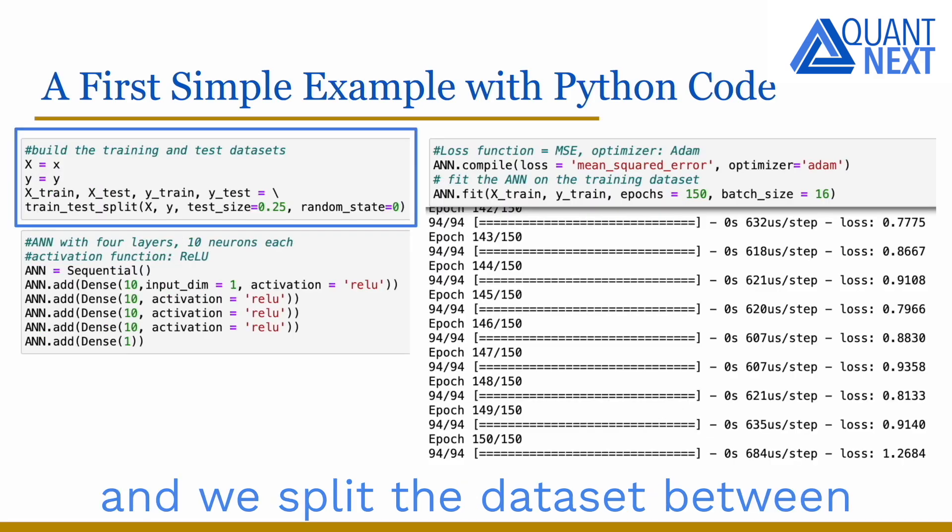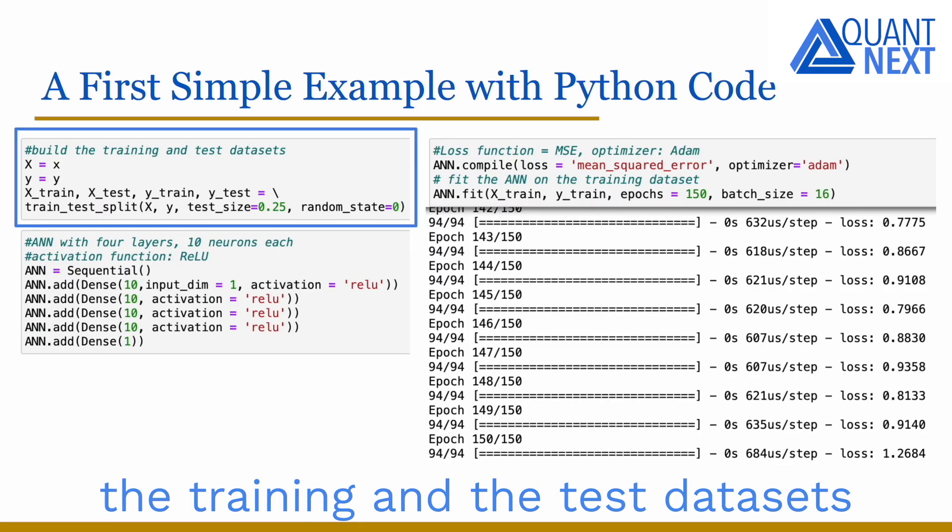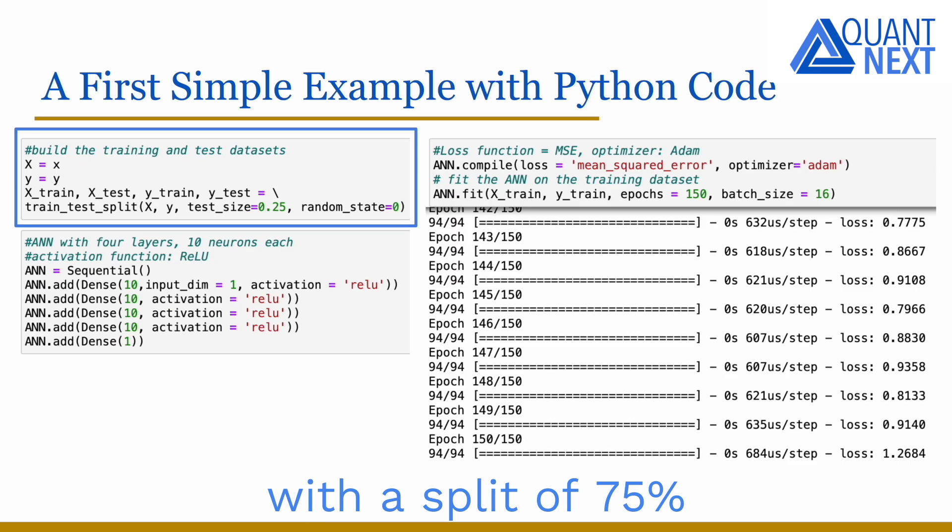We use values between minus 10 and plus 10 for x in the dataset. And we split the dataset between the training and the test dataset with a split of 75% for the training and 25% for the test.